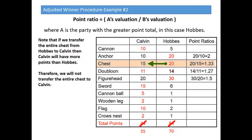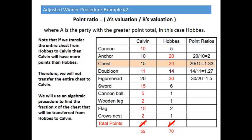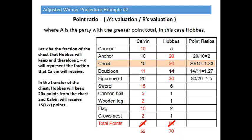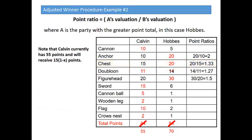Therefore, we're not going to transfer the entire chest to Calvin, but we're going to use an algebraic procedure to find the fraction x of the chest that will be transferred from Hobbes to Calvin. Let x be the fraction of the chest that Hobbes will keep, and therefore 1 minus x will represent the fraction that Calvin will receive. In the transfer of the chest, Hobbes will keep 20x points from the chest, and Calvin will receive 15 times (1 minus x) points. The 20 comes from the points Hobbes initially gave the chest; the 15 comes from the points Calvin initially awarded the chest. Calvin currently has 55 points from the cannon, doubloon, sword, cannonball, wooden leg, flag, and crow's nest, plus the fraction of the chest: 15 times (1 minus x).